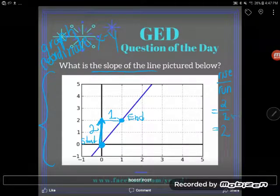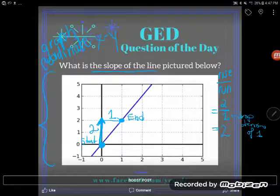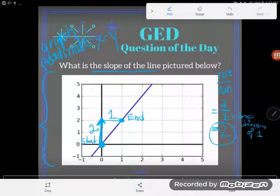Remember, a fraction bar means the same as divide by. Okay, so there we go. That particular line has a slope of two.